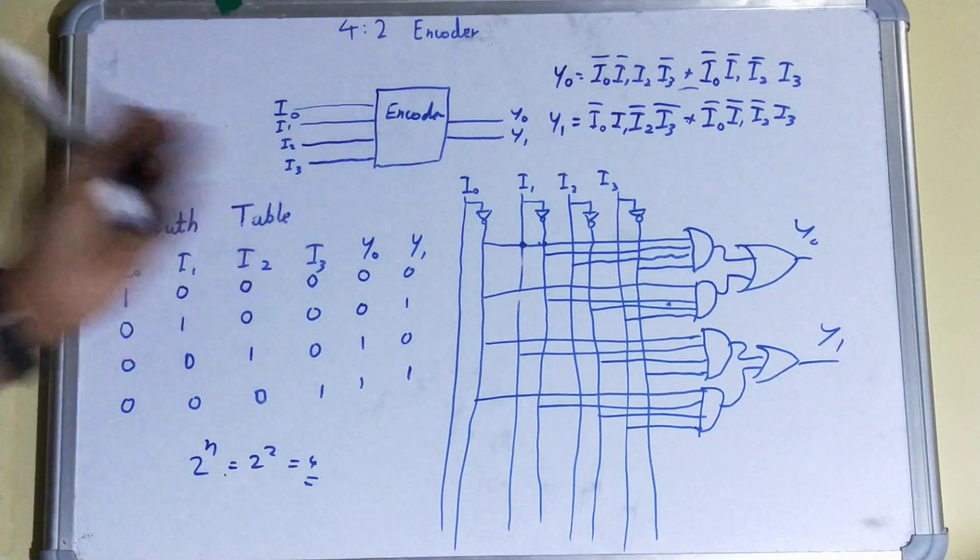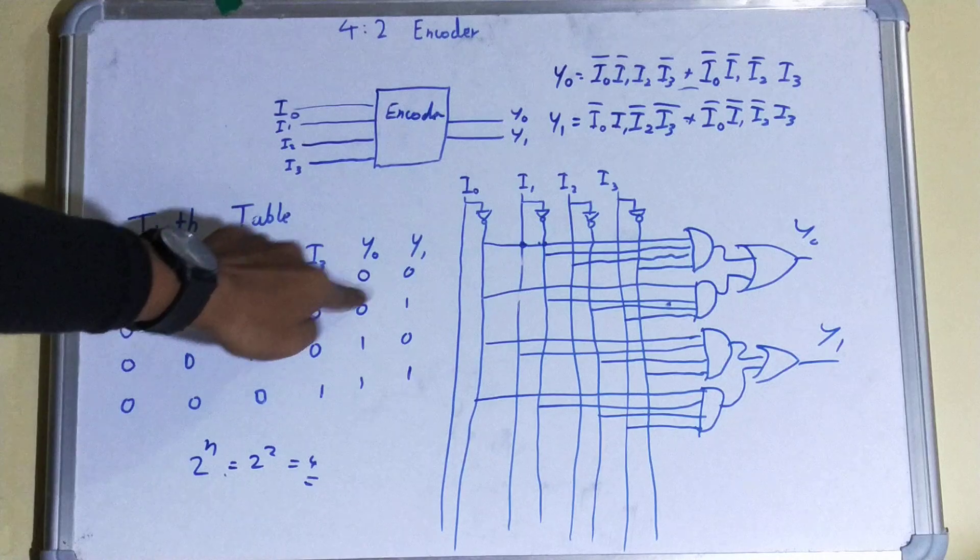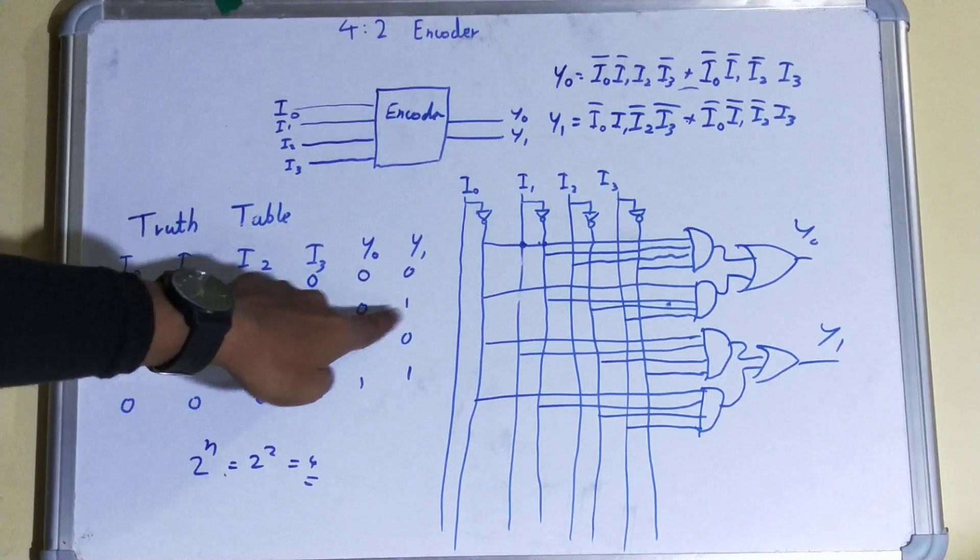How to make a table for four sets of inputs? Like 00, 11, and next 01, 01. So if you get your I0 as high, then output will be 00. If your I1 is high, then output will be 01, and so on.